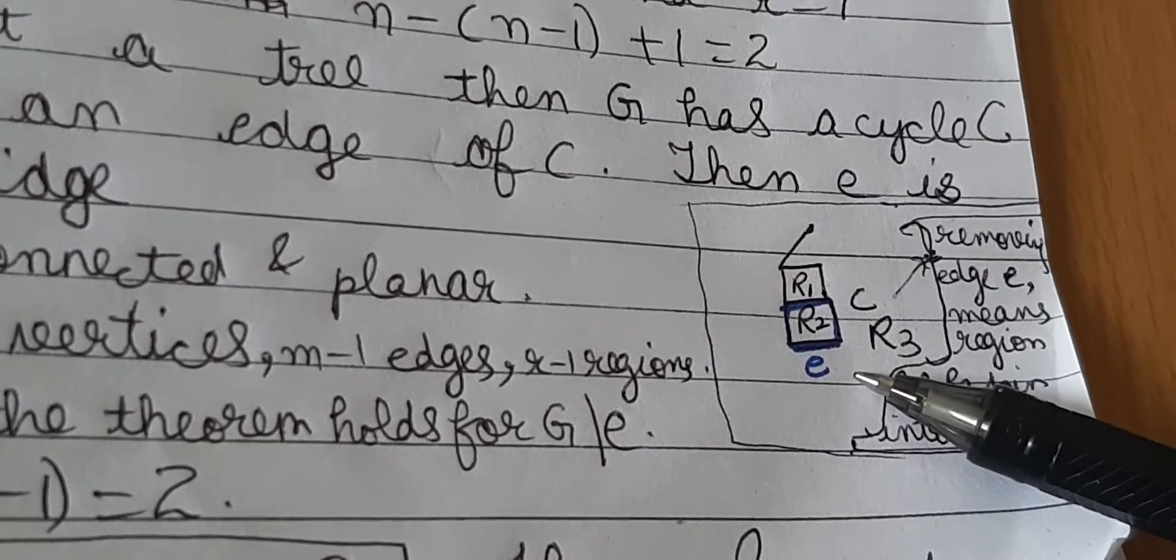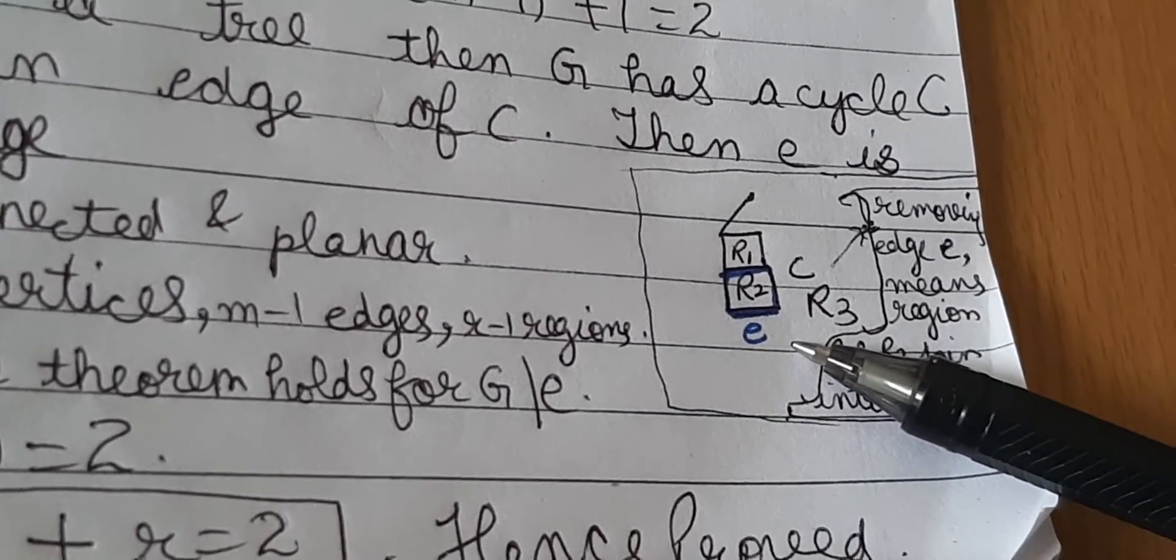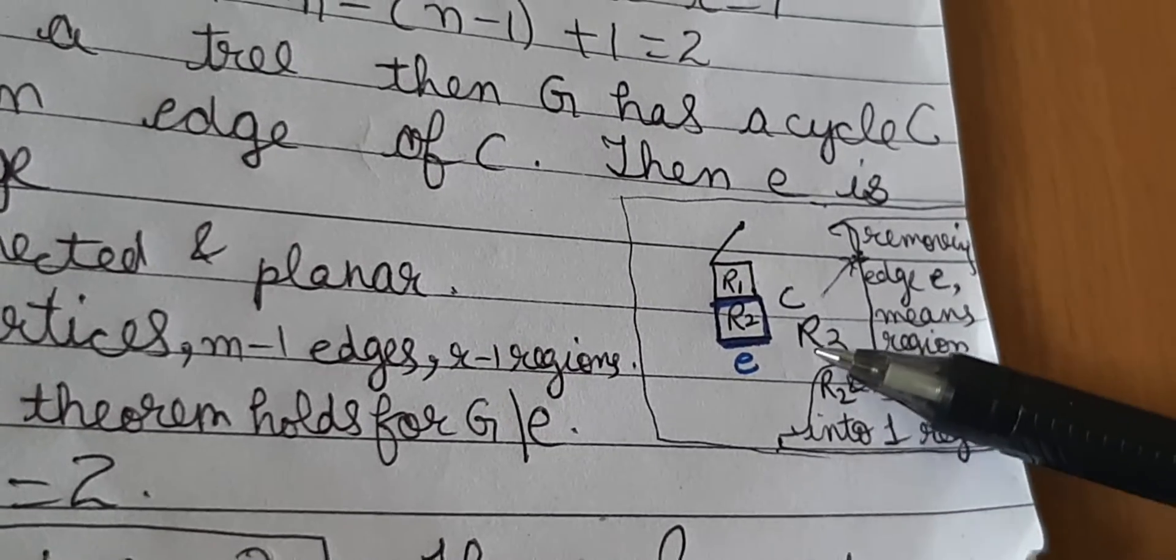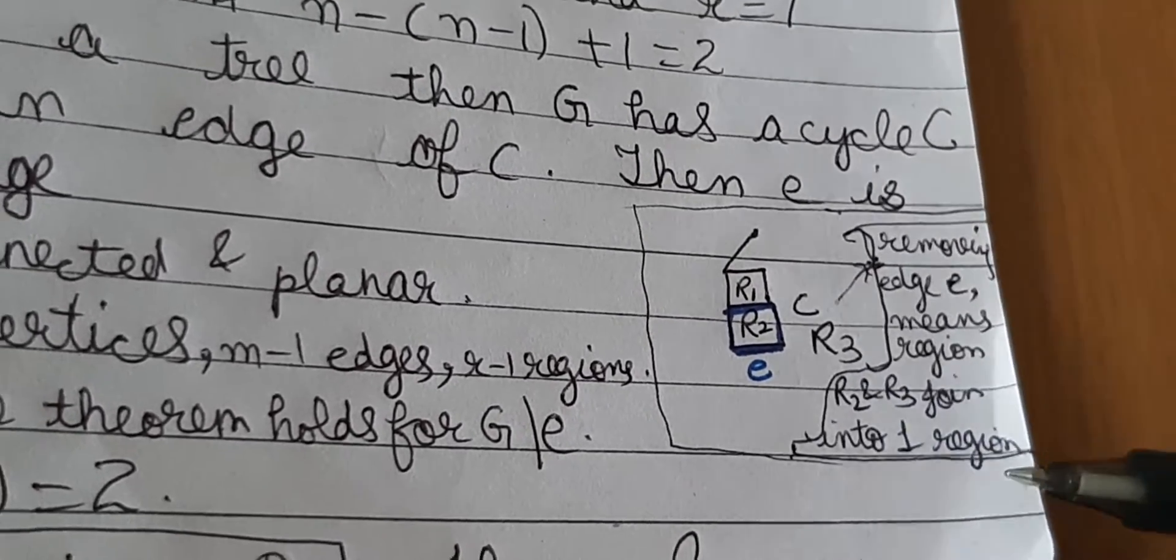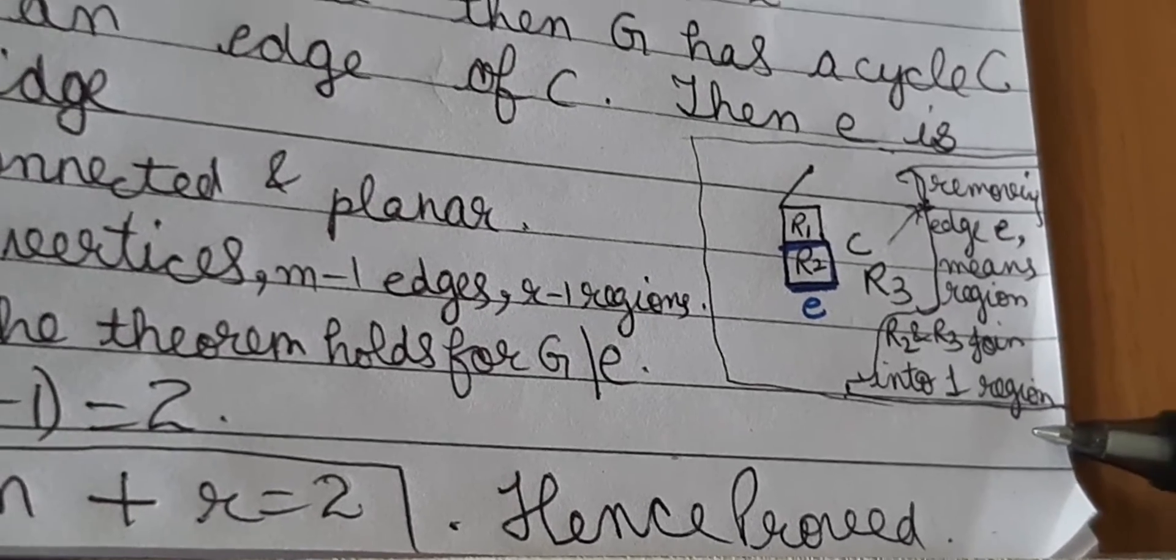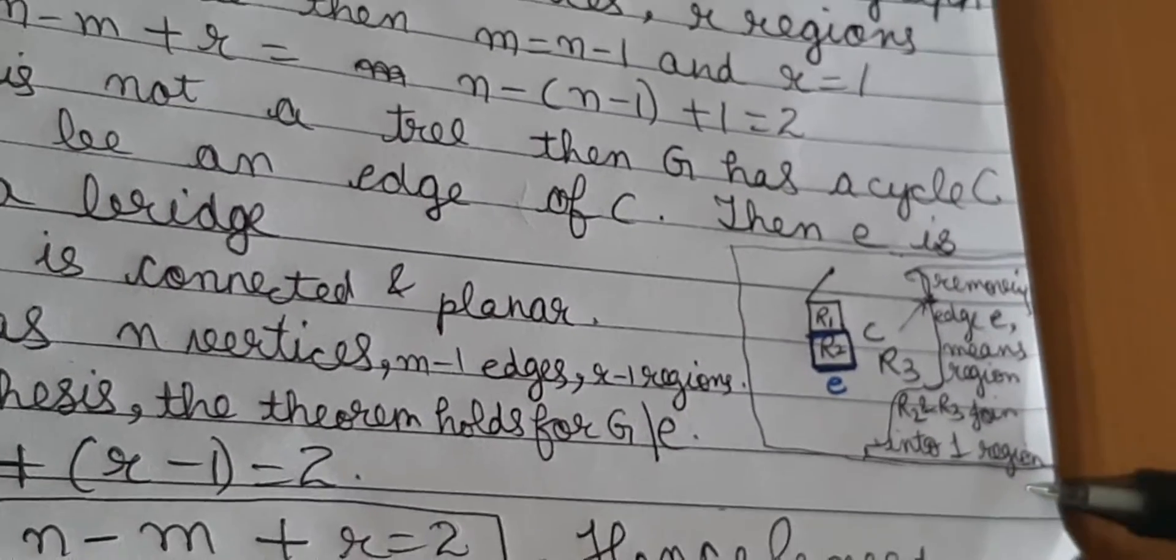So in this case if I highlight a particular cycle and name this as C, and next I highlight an edge of that cycle and call it e, you can clearly see that if you remove that edge you are not going to disconnect that graph. Also of course the graph stays planar.